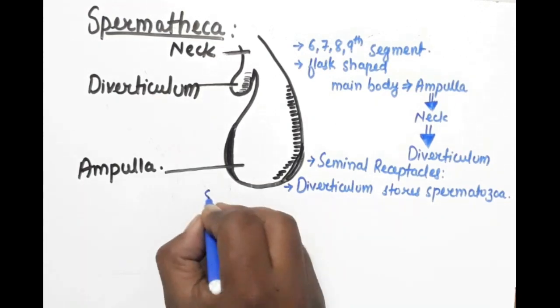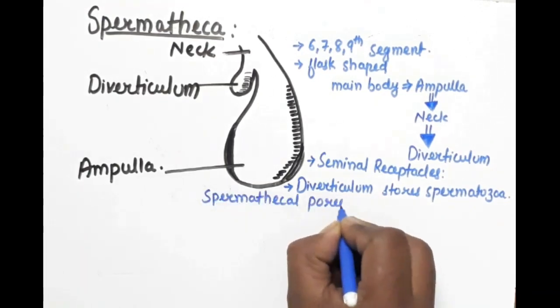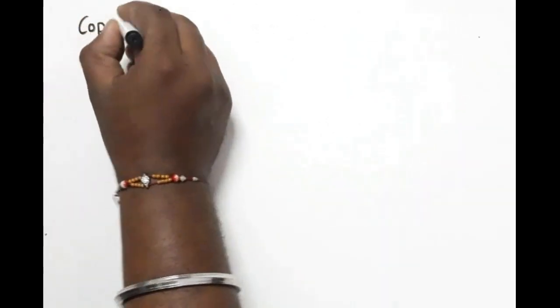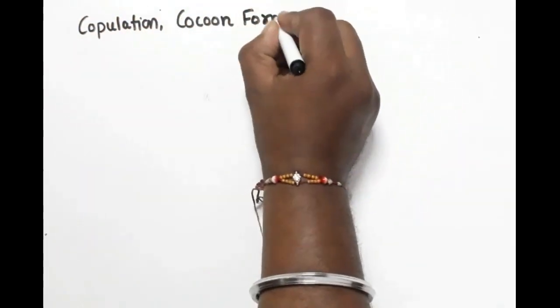They are called seminal receptacles because they store the sperm from the other earthworm. The spermatheca pores open to the body in the 5th-6th, 6th-7th, 7th-8th, and 8th-9th segments.